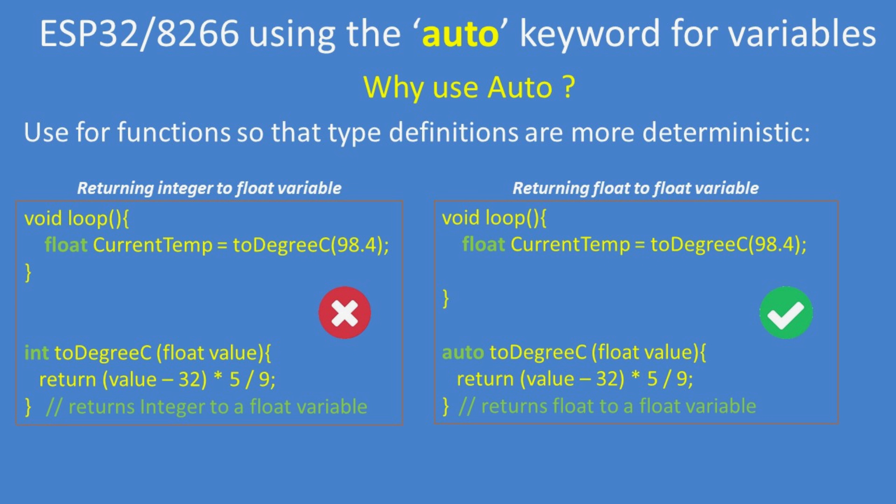Here I've defined a function called toDegreeC with a float variable currentTemp. The function should return a floating point type, but somewhere in my code I've returned it as an integer, which is incorrect. However, using the auto keyword would have given me the correct answer—auto toDegreeC would return the proper type.